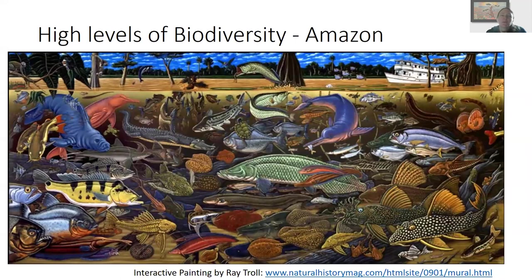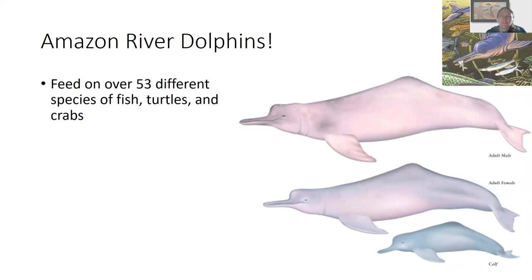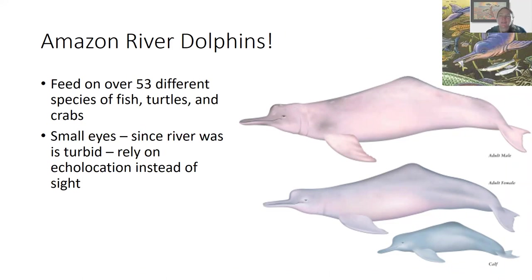There's some really cool research in the Amazon looking at biodiversity. This is a mural painted by Ray Troll — if you stop the video and go to the link at the bottom, you can interact with the painting and it will identify every fish species in the picture. One I want to focus on is the Amazon River Dolphin. It feeds on over 53 different species of fish, turtles, and crabs. It has very small eyes and doesn't depend on sight since the river is so murky, and instead uses echolocation to identify and capture prey.